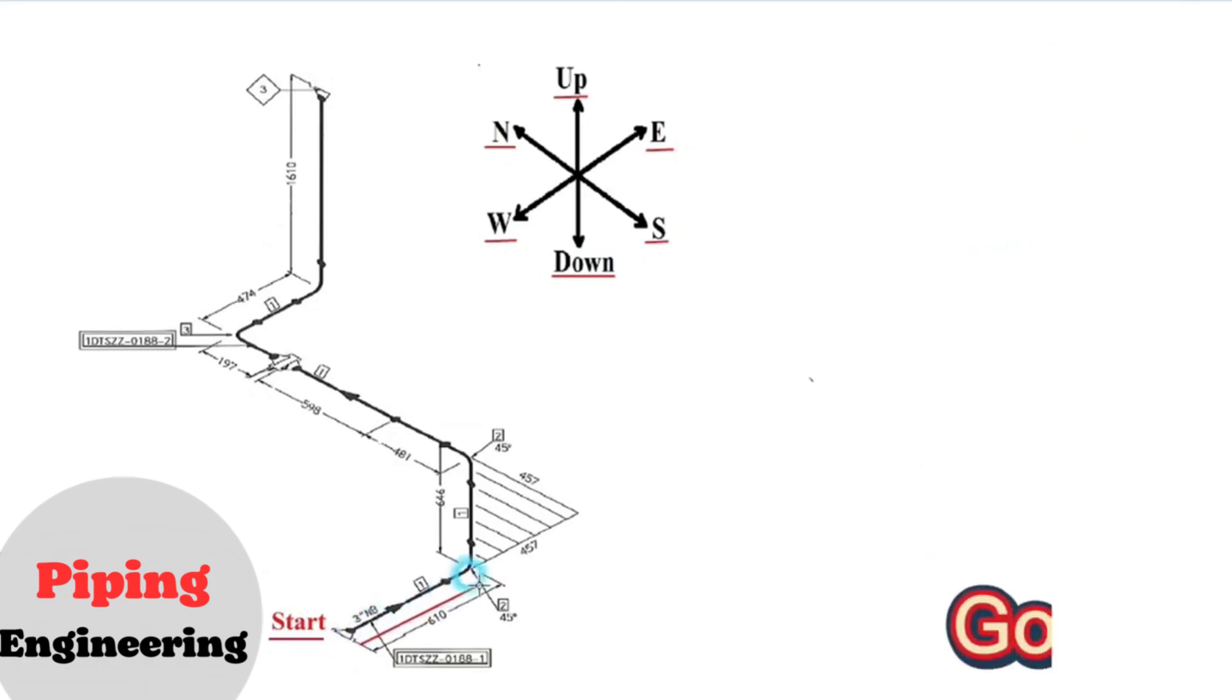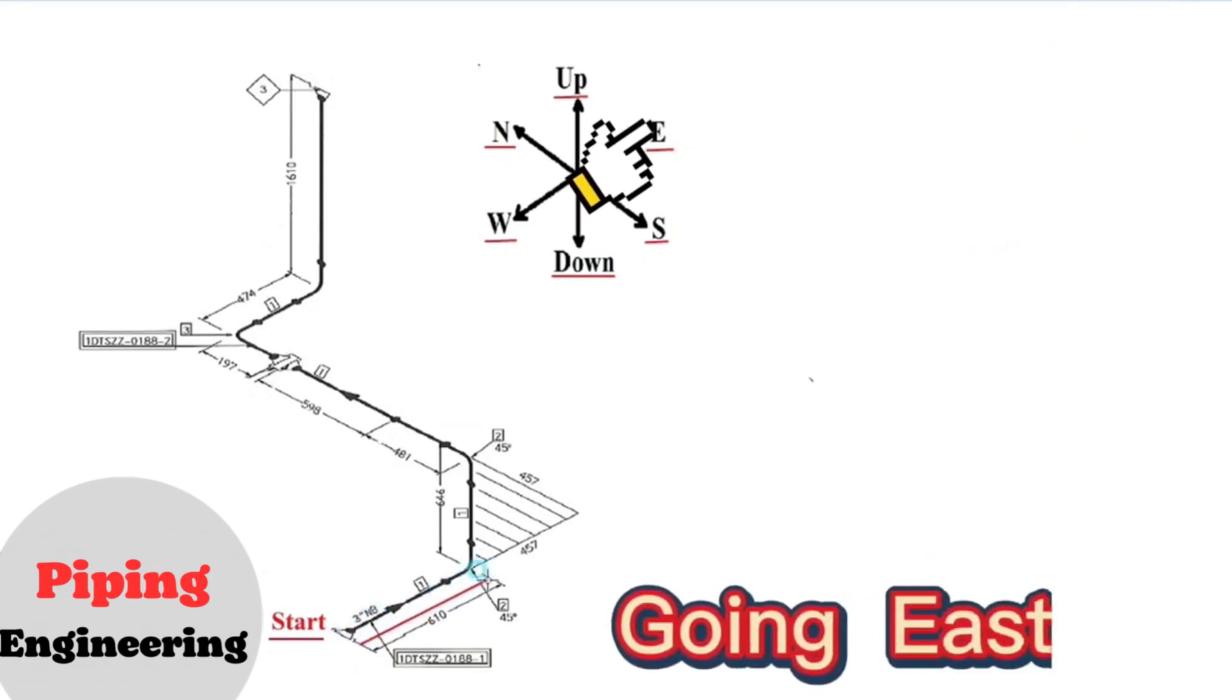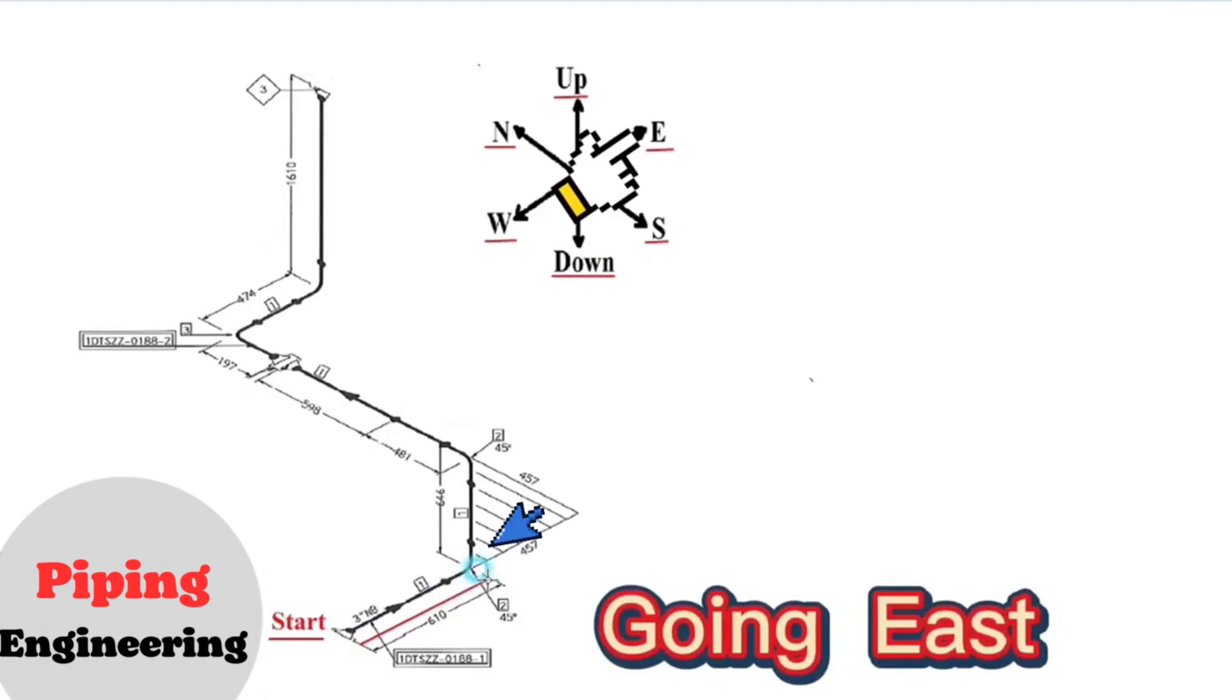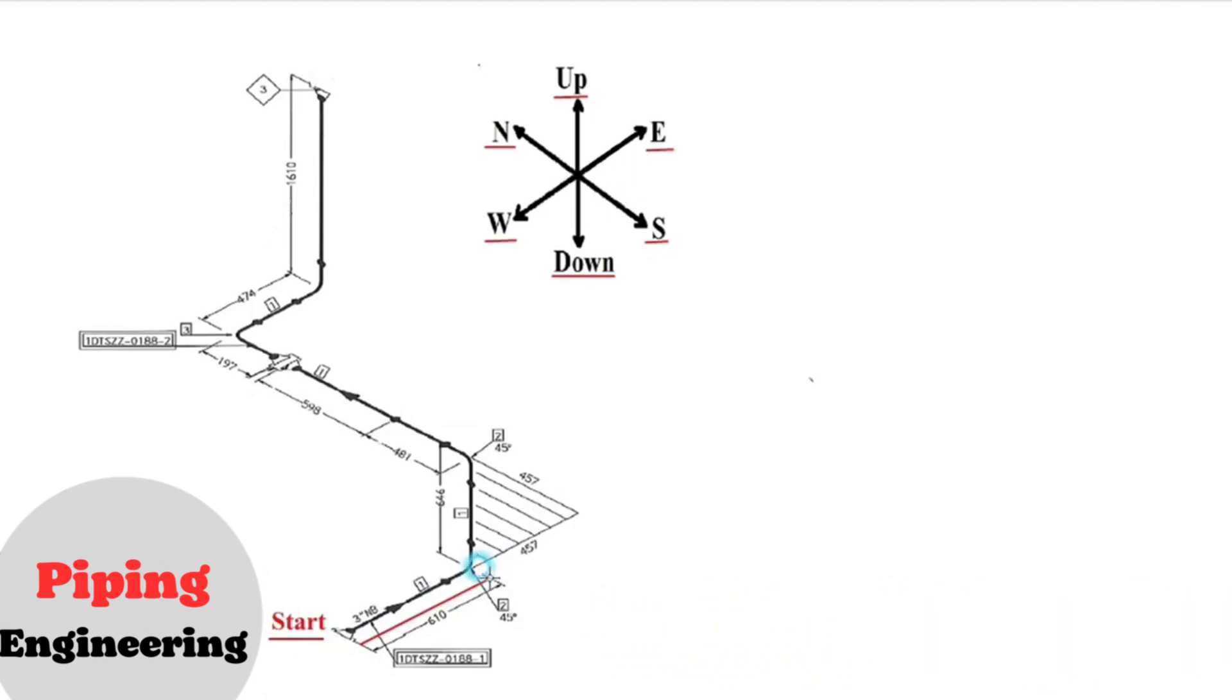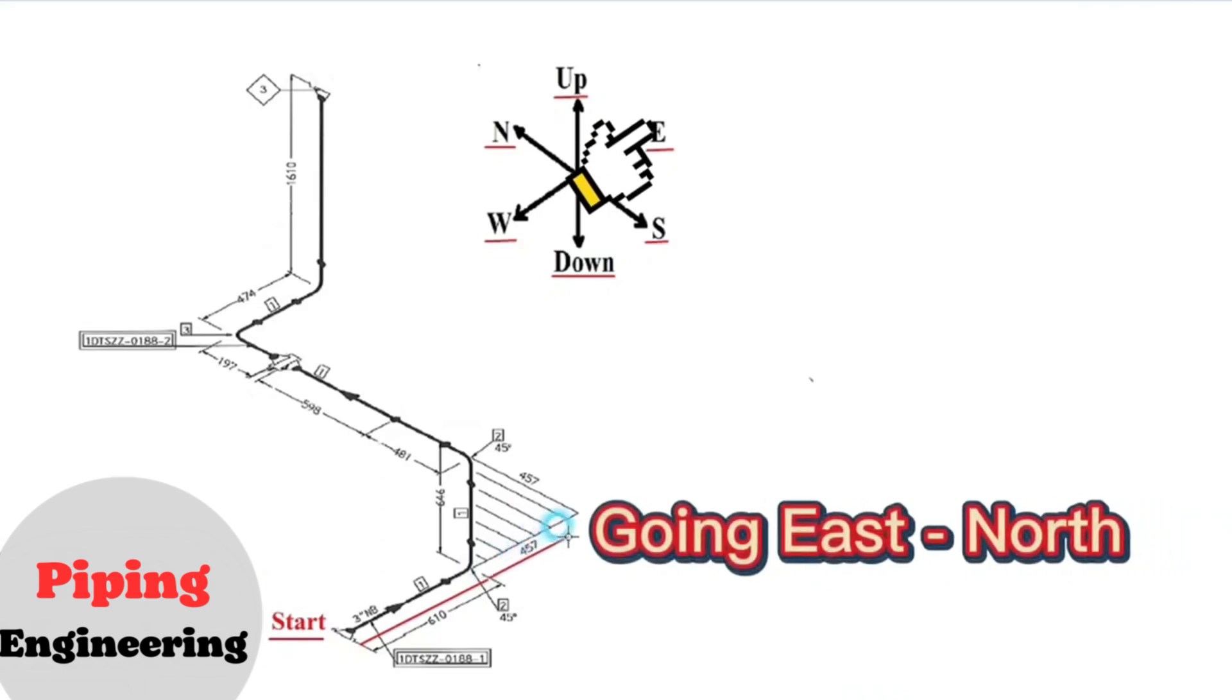The pipe travels start from this point to the east direction. There is an angle of 45 degrees. Therefore, the pipe travels to the east, then it travels north direction at an angle of 45 degrees.